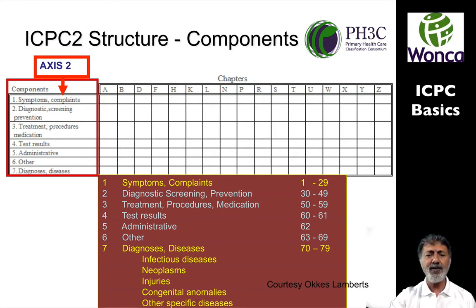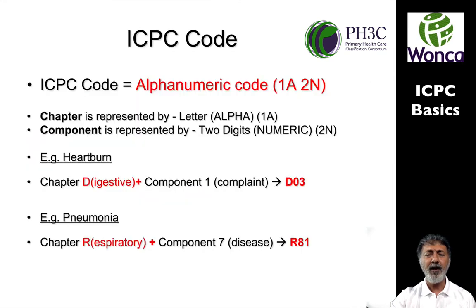The process codes run from 30 to 69, and there are sub-components to them that you might look at.